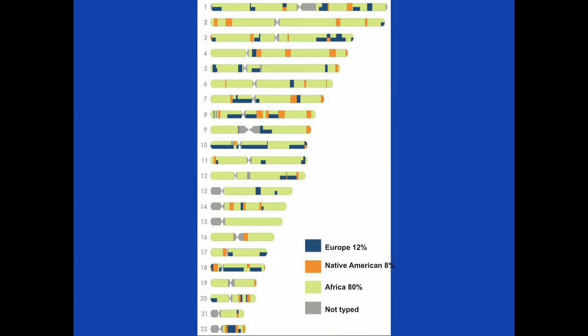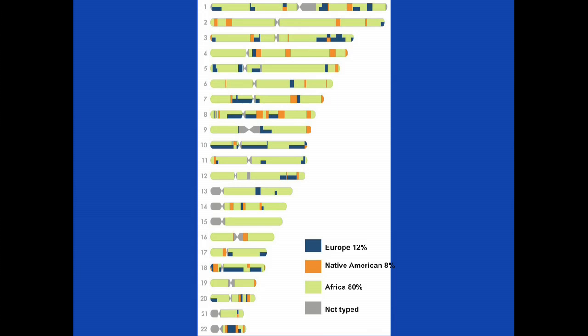This is actually my own chromosome data, obtained through 23andMe. I was thinking I was 100% Mandingo, but I found that I'm only about 80% West African ancestry, with 12% European and 8% Native American ancestry. My mother swore we were Native American, and it turns out she was right. When I look at my Y chromosome, it doesn't trace back to Africa — it traces back to Europe, and is quite common in Germany.